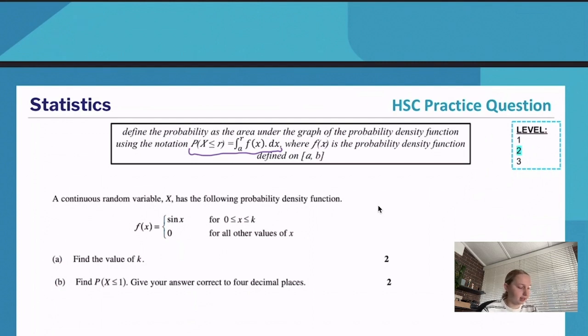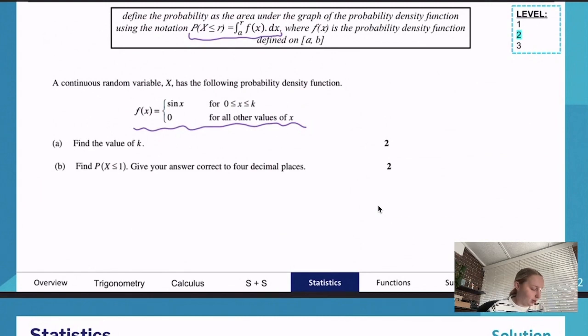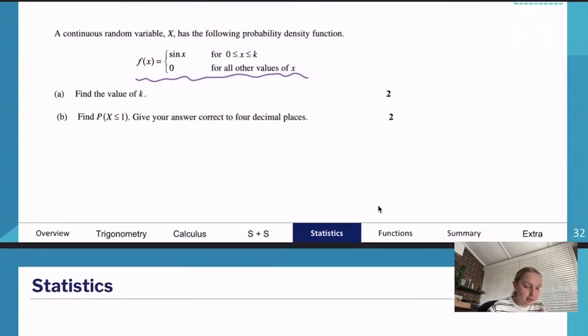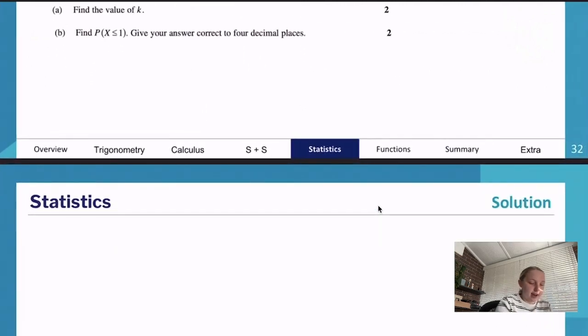We've got a continuous random variable x has the following pdf. Find the value of k. We want to be finding the value of k. If we know this is a probability density function, we know that when we integrate it we're going to get an area of one, because that is one of our properties of pdfs. So we can say that between k and zero, the integral of sine x dx is equal to one.